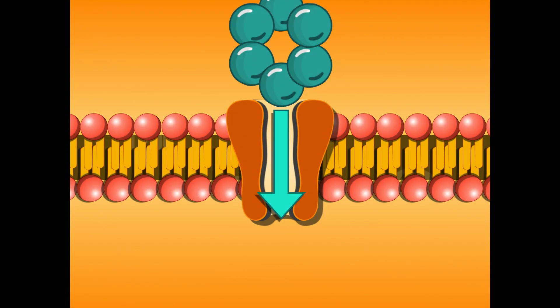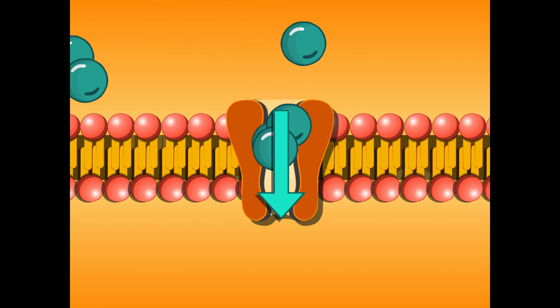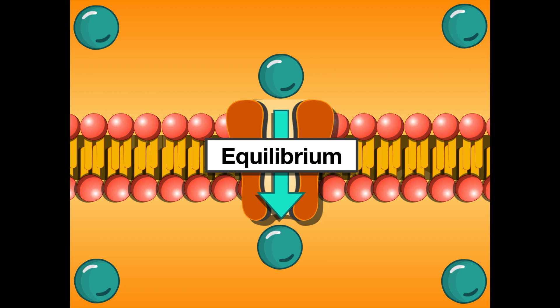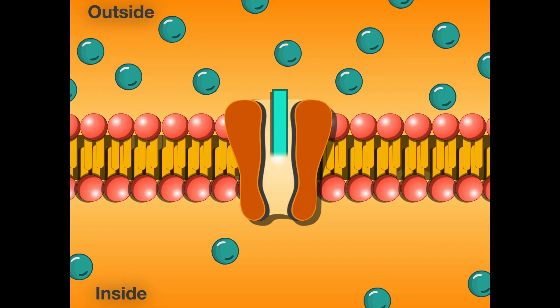Remember, what we're trying to achieve here via diffusion is equilibrium. We want to achieve the maximum spread of these molecules — they naturally want to go through and diffuse. Let's look at this scenario and change the parameters a little bit.